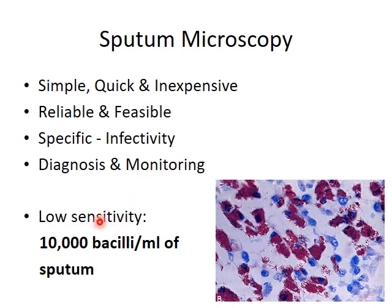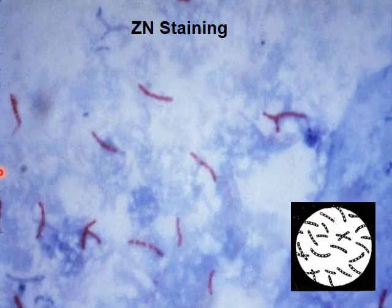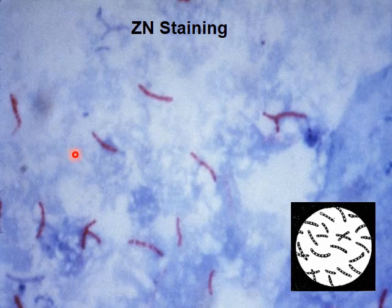However, there are disadvantages like low sensitivity. ZN stain has a sensitivity of 10,000 bacilli per ml of sputum. Another disadvantage is that it cannot determine the viability of the bacilli.